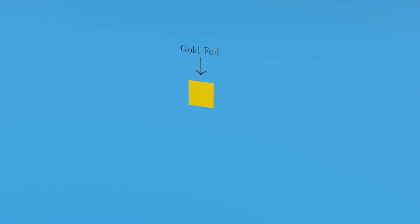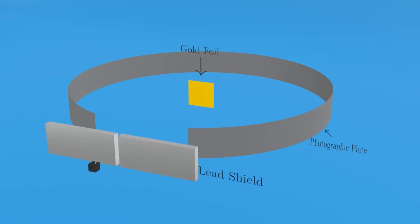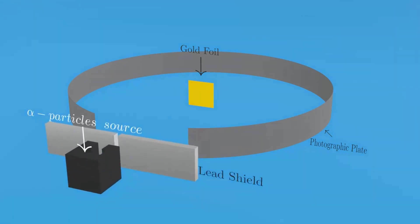In this experiment, a thin gold foil with a thickness of 100 nm is carefully positioned within a photographic plate. Additionally, you will notice the presence of a lead shield and an alpha particle source emitter.